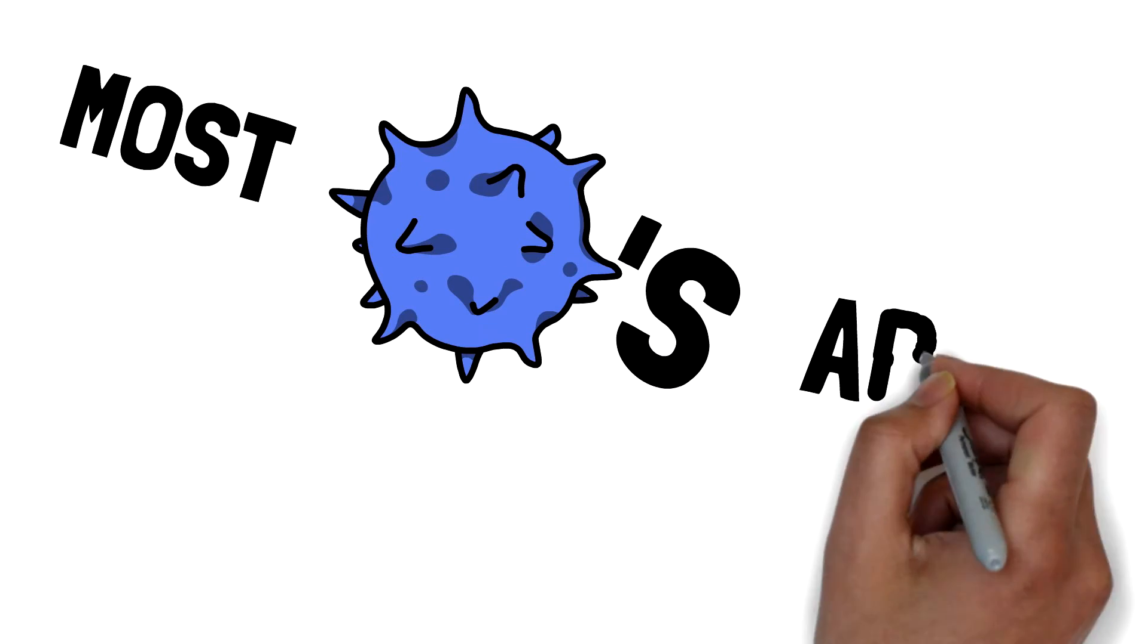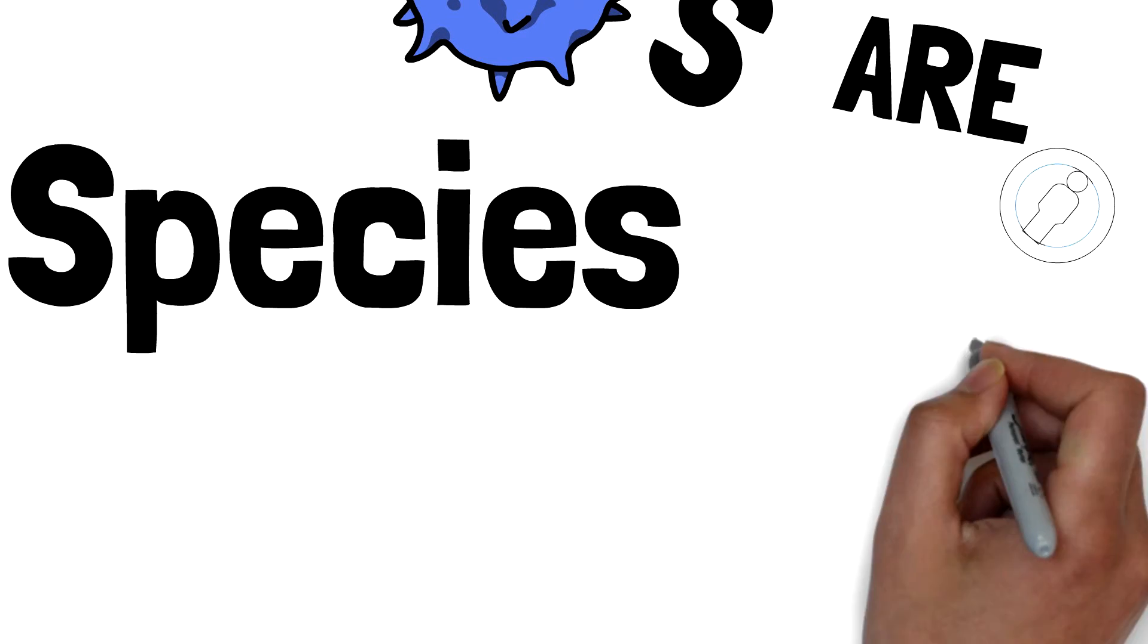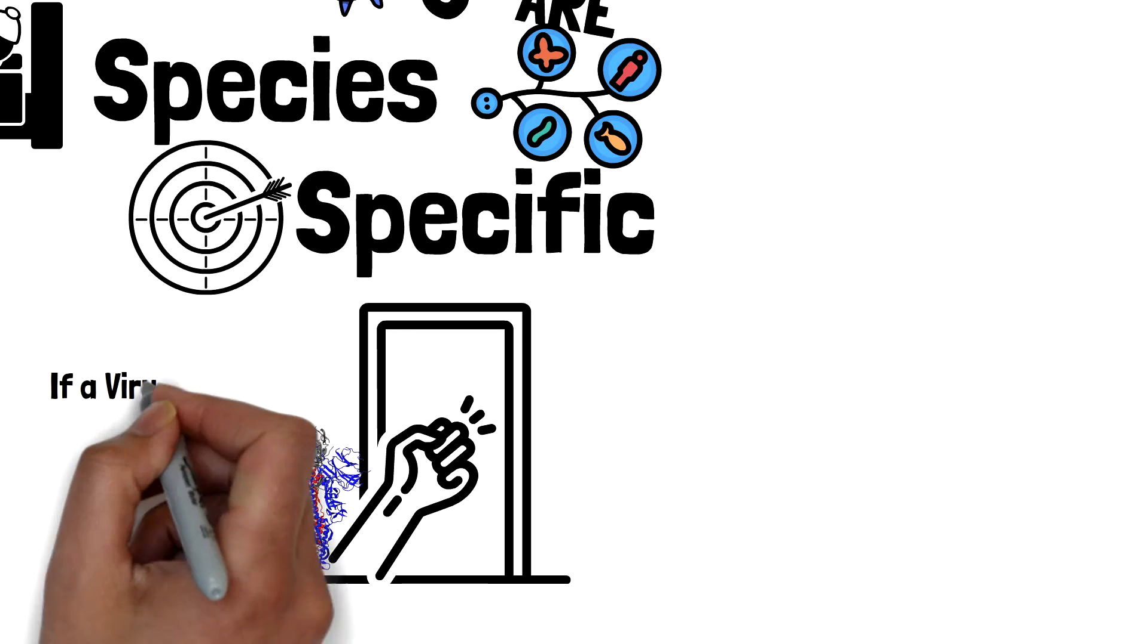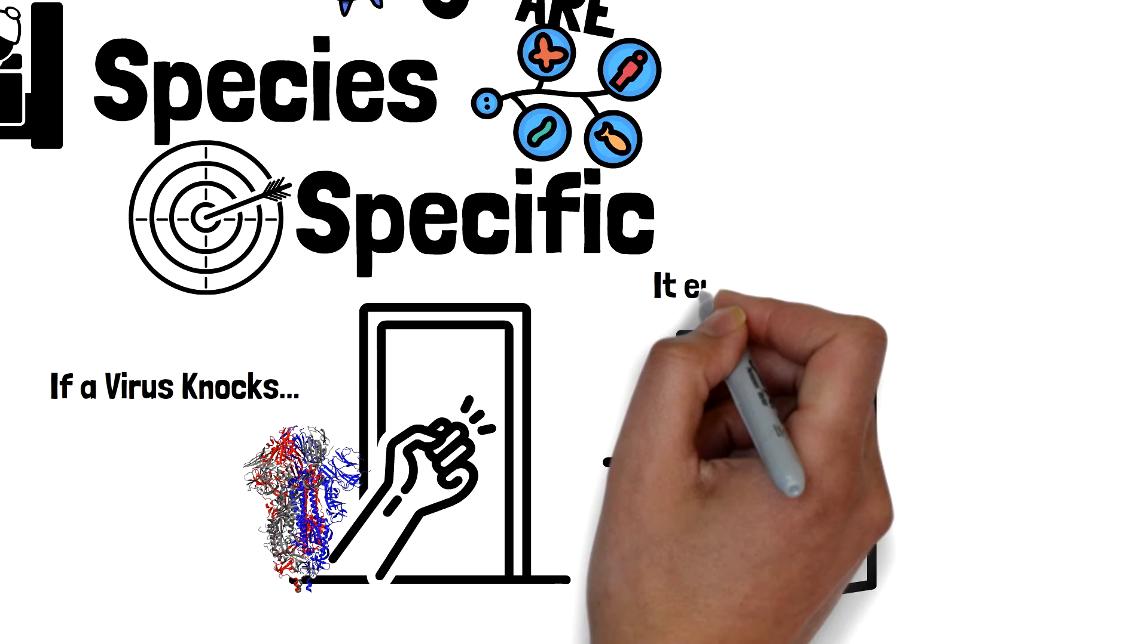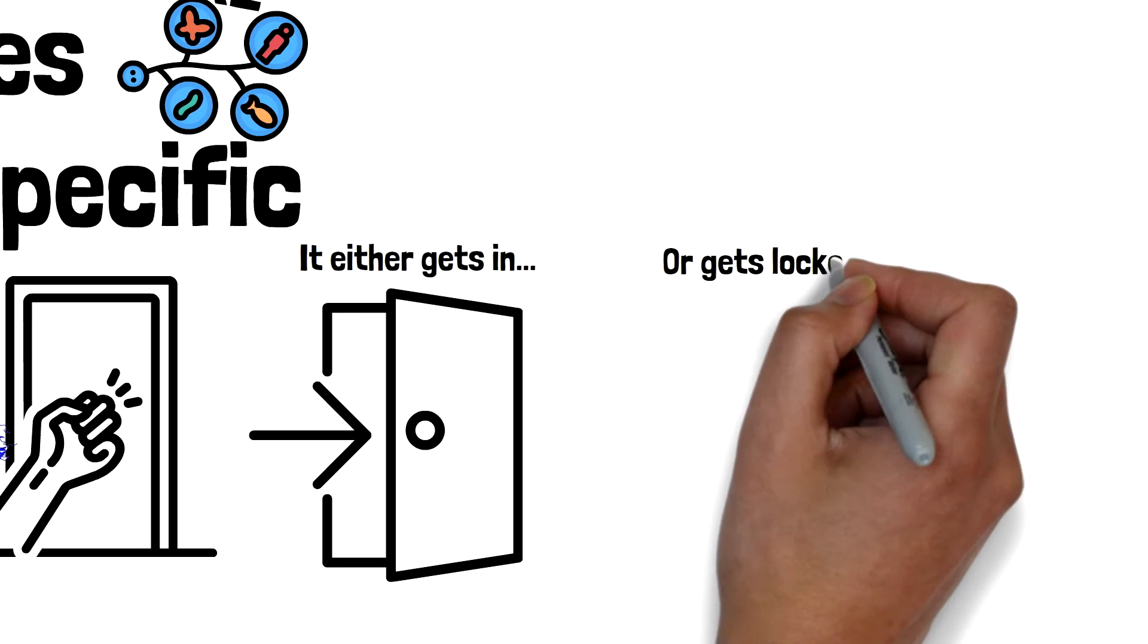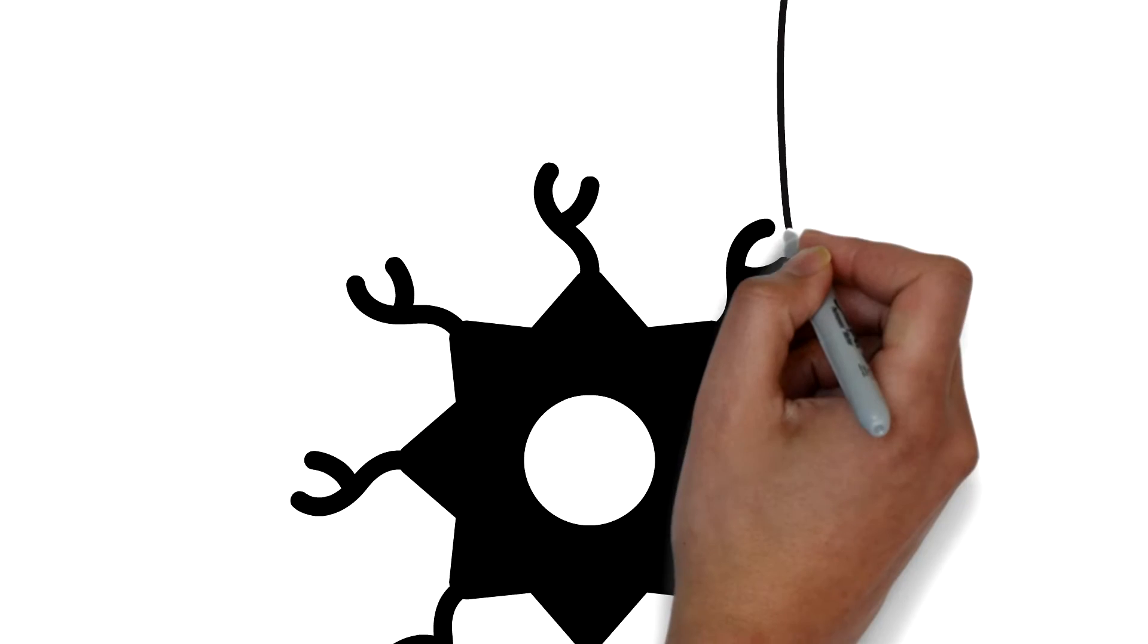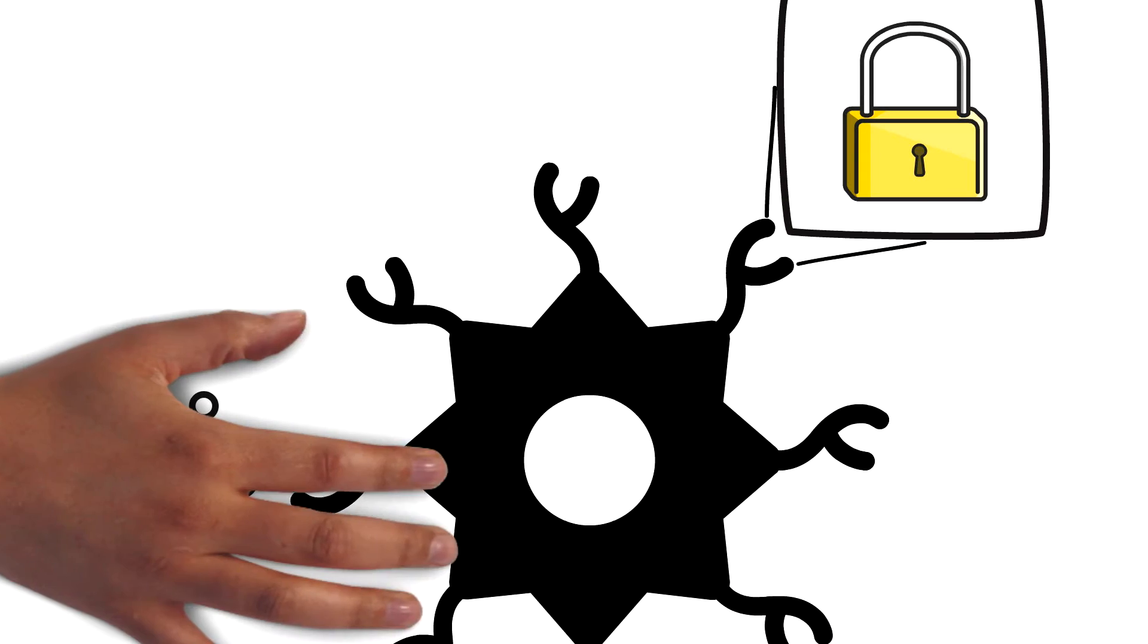that most viruses are species specific, which means that they can't affect a member of another species unless they have very specific proteins on them that allow them to bind to the receptors on the cells which will then let them enter. These receptors, which act as a lock and key, won't allow anything to squeeze through them unless the